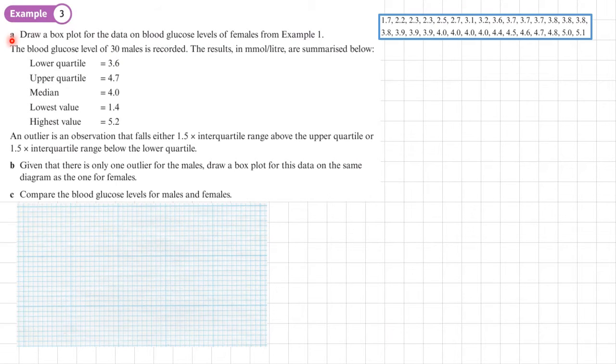In Example 3 part A, we want to draw a box plot for the data on blood glucose levels of females from Example 1. We've already worked out these values. You can go back and have a look at Example 1 from section 3.1, but we worked out Q1 to be 3.2, Q2 to be 3.8, and Q3, the upper quartile, to be 4.0.